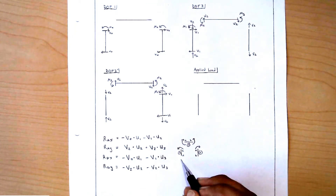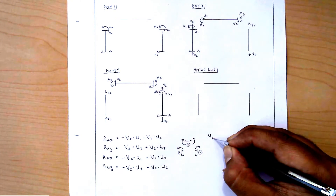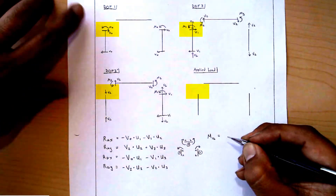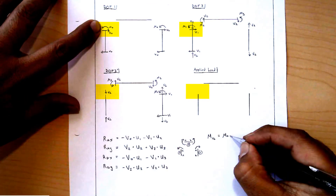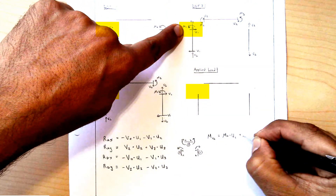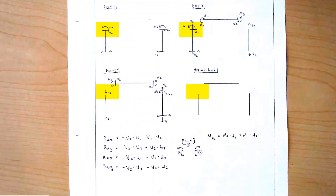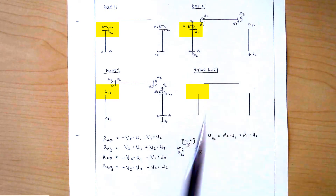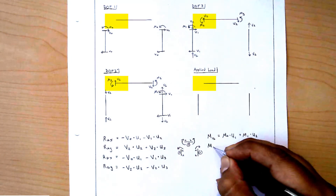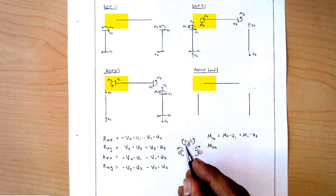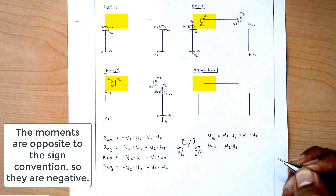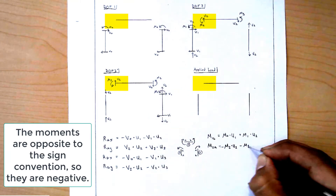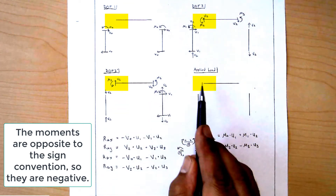Let's go clockwise around the structure and start with the moment on member 1 at location B. Right here we have M0, which is in the same direction as my sign convention, so it carries a positive sign scaled by U1. Over here we have M1 scaled by U2 from DOF2. Nothing from DOF3 or the applied load. For moment on member 2 at location A, there's nothing from DOF1, then minus M2 for DOF2, minus M3 for DOF3, and nothing for the applied load.